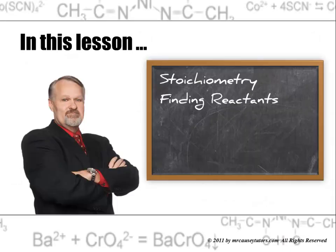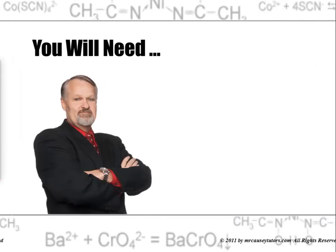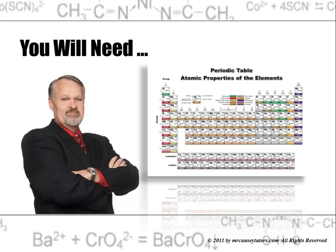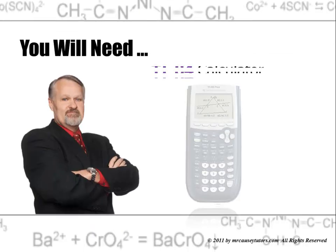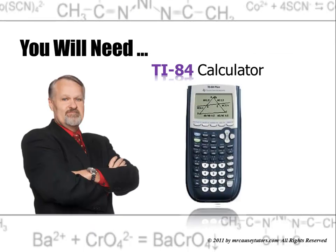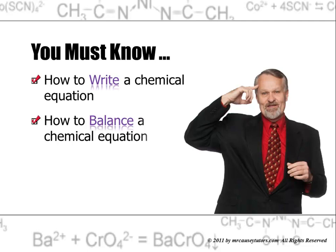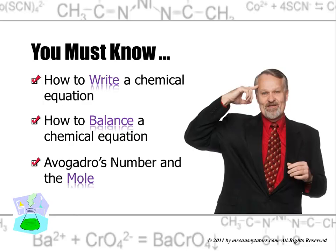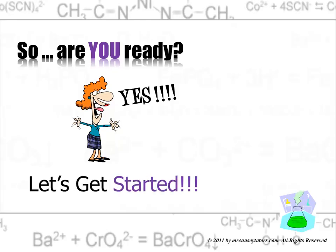In this lesson we're going to talk about stoichiometry, finding the reactants, and finding the products. You'll need a periodic table, a polyatomic ions chart, and a calculator. And you must know how to write a chemical equation, how to balance a chemical equation, and Avogadro's number and the mole. If you don't have these completely down, go to my YouTube channel and check it out. So, are you ready? Let's get started.